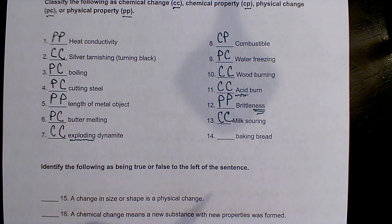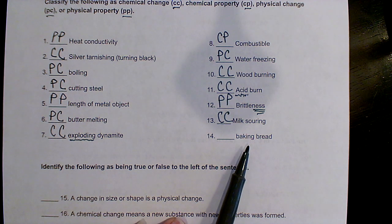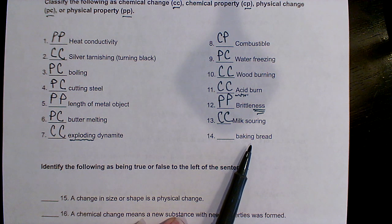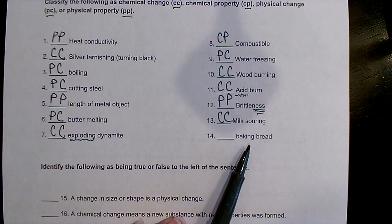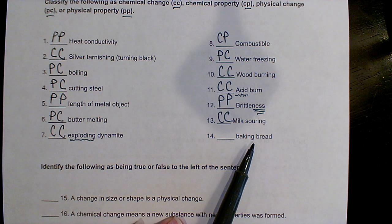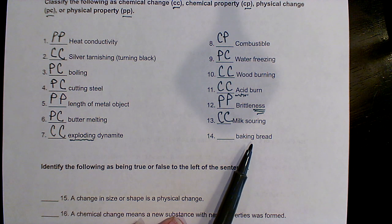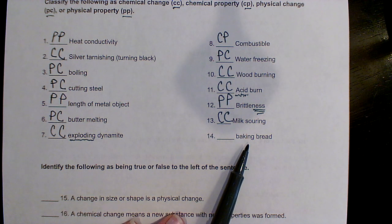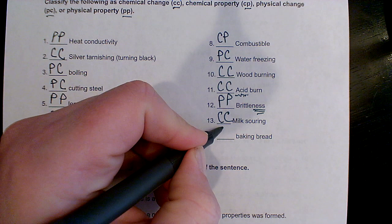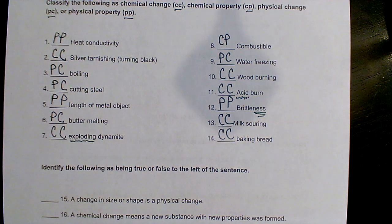Baking bread — one of our clues of chemical change was production of bubbles. When we bake bread, there's bubble production that gives us the big bubbles in our fluffy bread. There's also a color change — it goes from light tan to more of a golden brown. And baking bread smells good, so there's an odor, which was another clue. That's got to also be a chemical change.